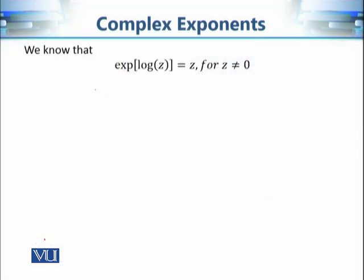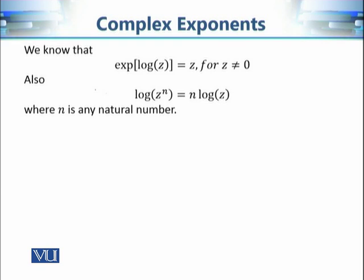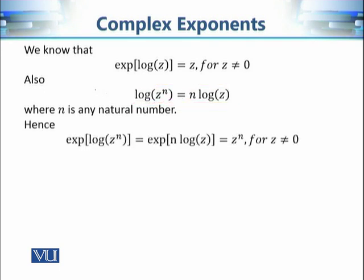We know that for a fixed complex number, the exponential and logarithm are inverses of each other, so composing them always gives z. We also know that according to the properties of the complex logarithm, log of z raised to power n equals n times log of z, where n is any natural number. Combining these two properties, the exponential of the logarithm of z raised to power n equals exponential of n log of z, which gives us z raised to power n.